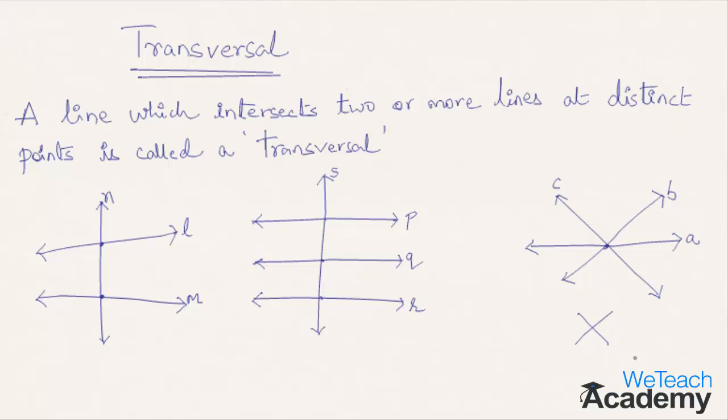So a line which intersects two or more lines at distinct points is called a transversal. Like in the first diagram, n is transversal to l and m, and s is transversal to p, q, r in the second figure.